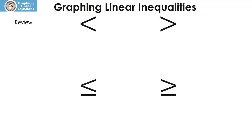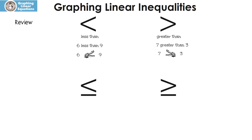Here are my inequality symbols. This one means less than, and this one means greater than. An example would be 6 is less than 9. How I learned it is the alligator wants to eat the bigger number. An example for greater than is 7 is greater than 3 — the alligator wants to eat the bigger number. When we graph linear inequalities, any time we have a less than or greater than symbol, we're going to use a dotted line.